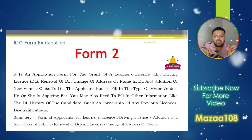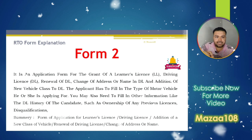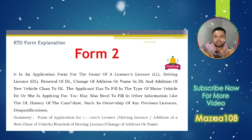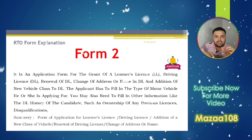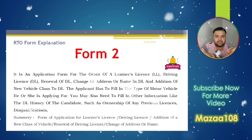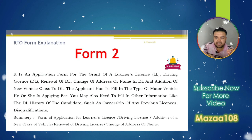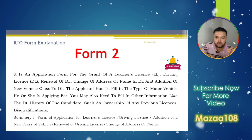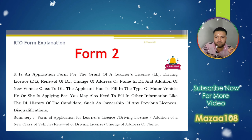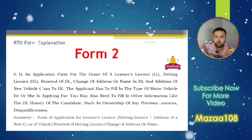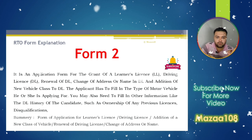Form 2 is an application form for the grant of a learning license (LL), driving license (DL), renewal of DL, or change of address or name in DL, and addition of a new vehicle class to DL. The applicant has to fill in the type of motor vehicle he or she is applying for, along with other required information.